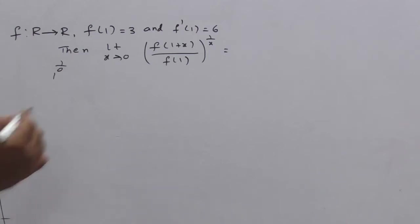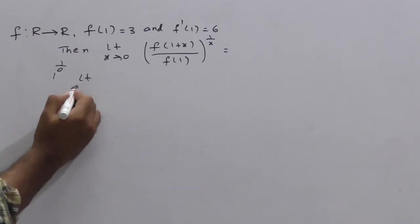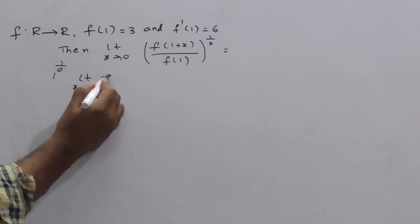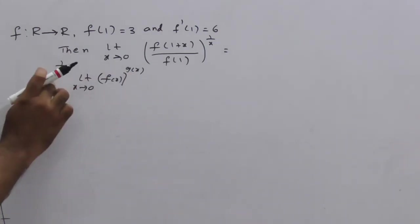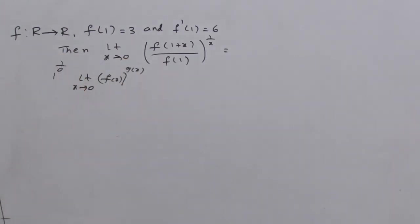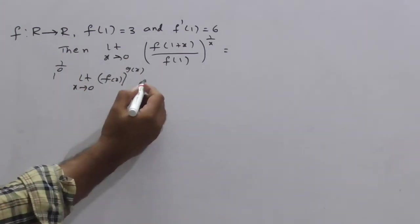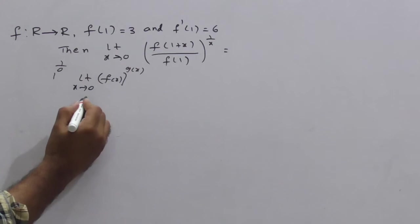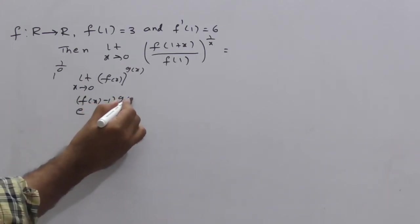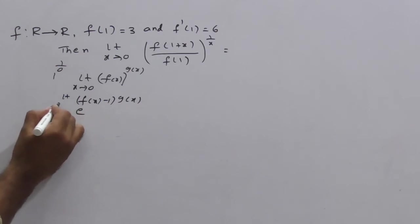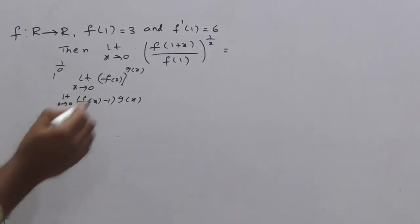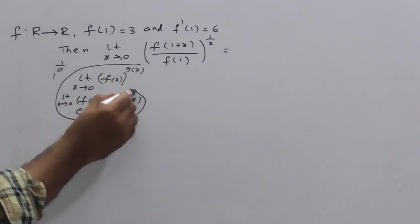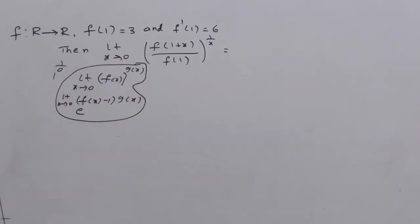So for this, what is the basic formula? Limit x tends to 0, f(x) whole power g(x). If f(x) tends to 1 and this g(x) tends to 1 by 0, this limit can be written as e power f(x) minus 1 into g(x), where limit is x tends to 0. Clear? Now, so use this basic concept, very useful formula for this type of limits.